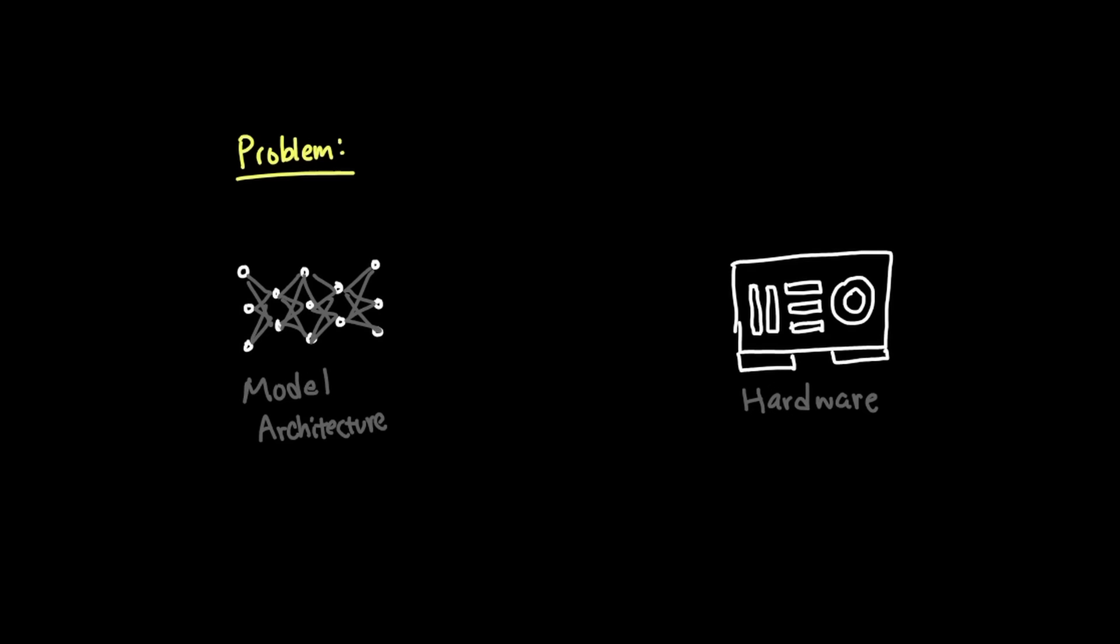Let's start with addressing the real problem first. And the problem is the dichotomy between model architecture and hardware. And while each influences one another, they also sort of innovate on their own. And in many ways, model architecture sometimes has to compromise to hardware limitations and hardware sometimes accelerates or limits model architecture.